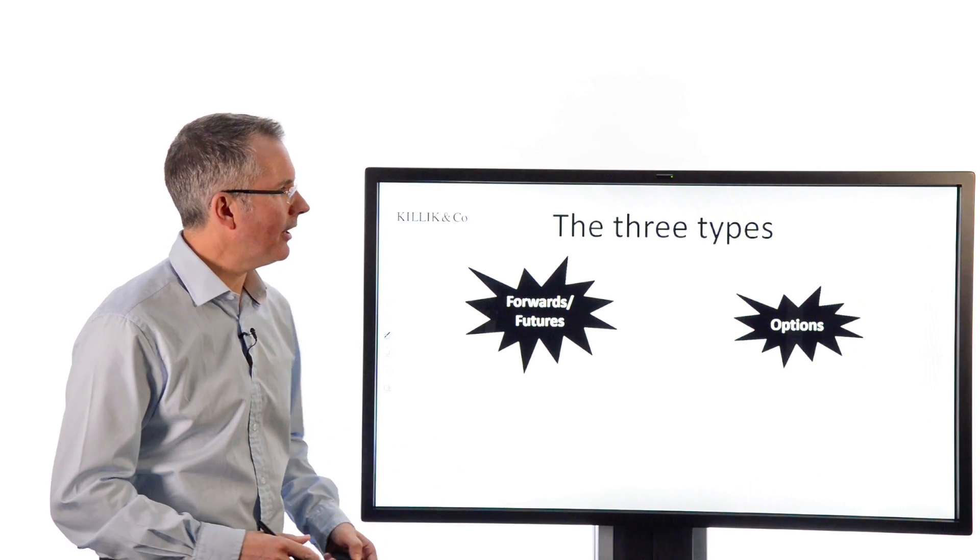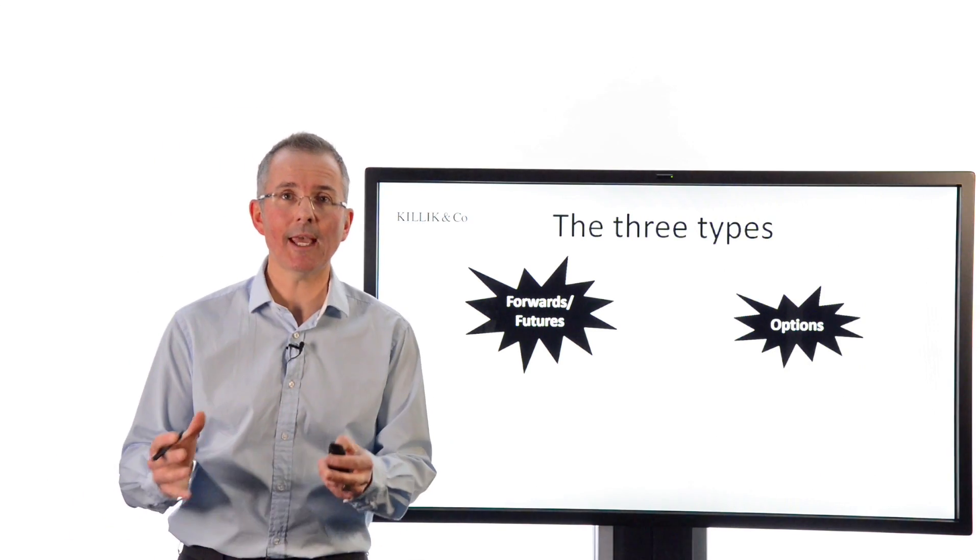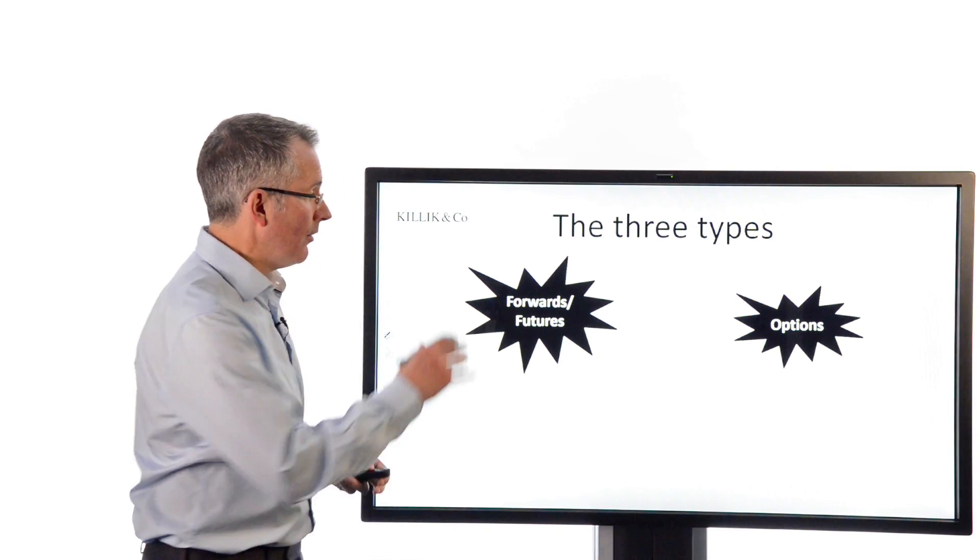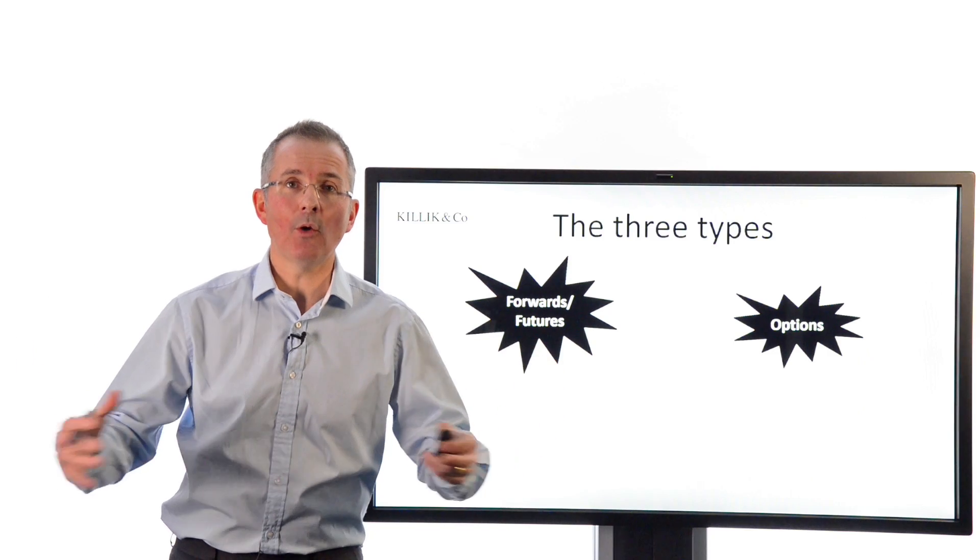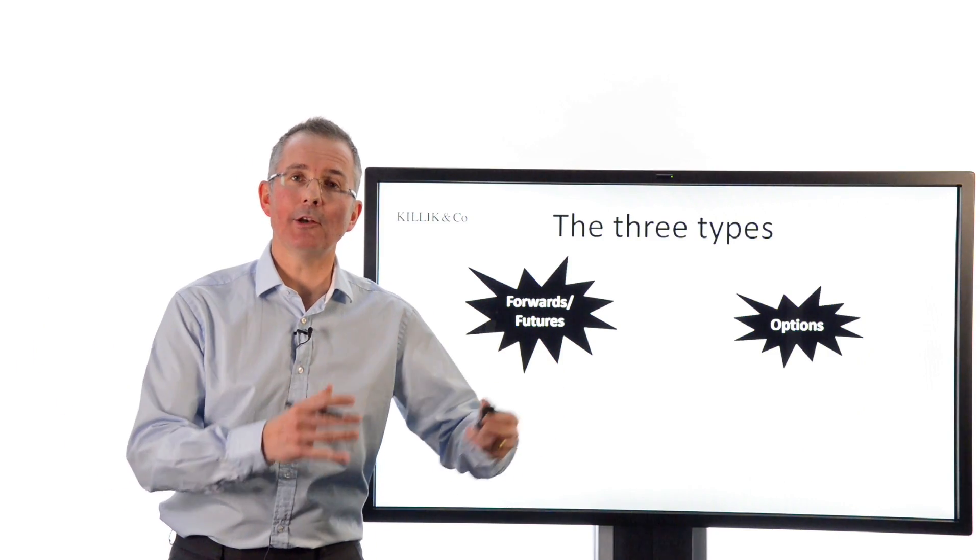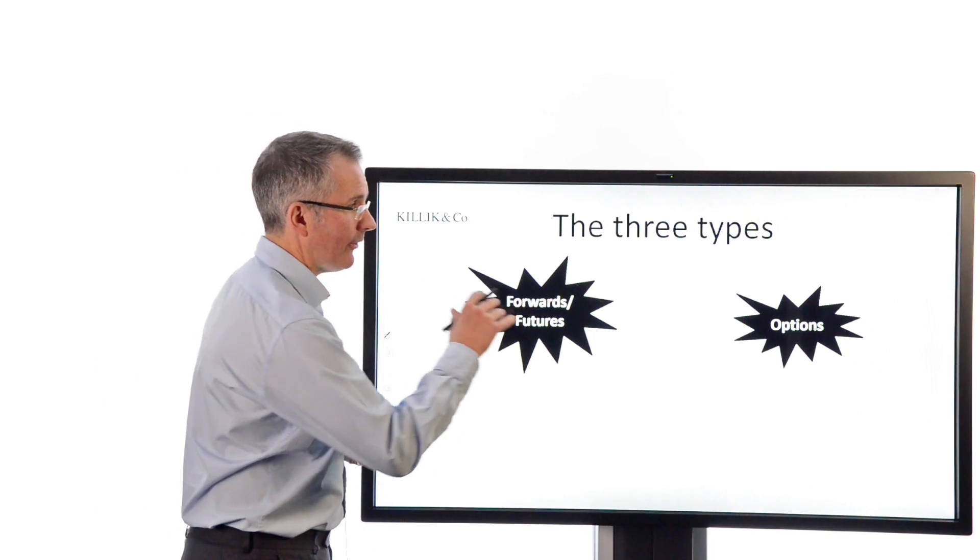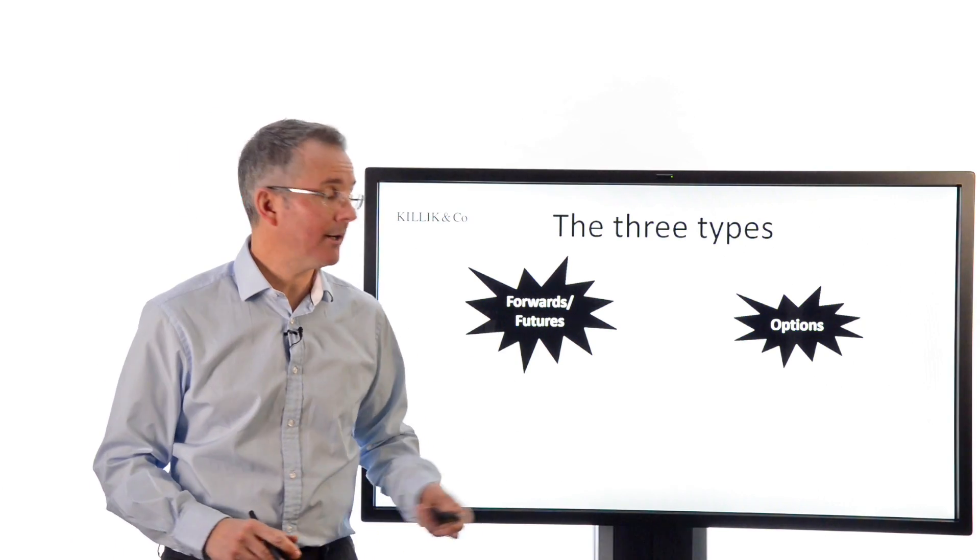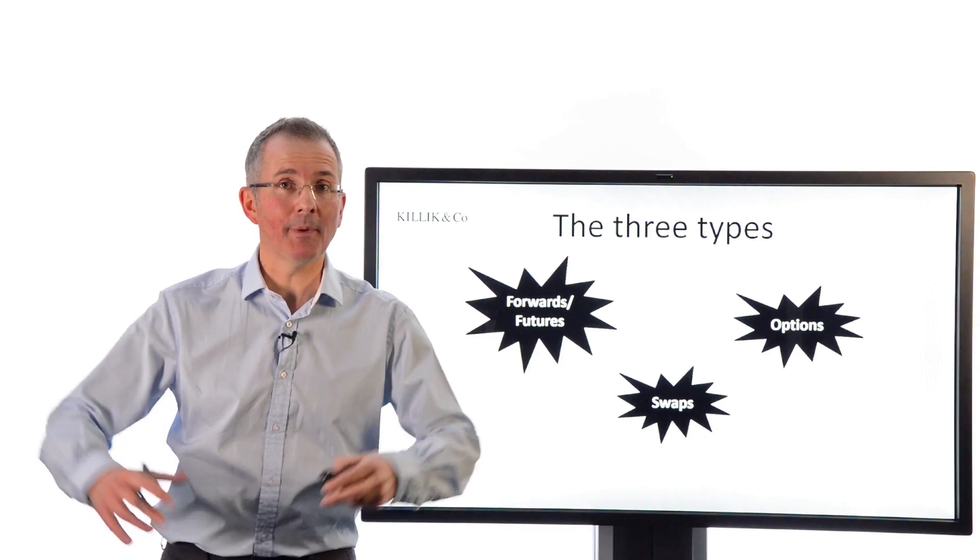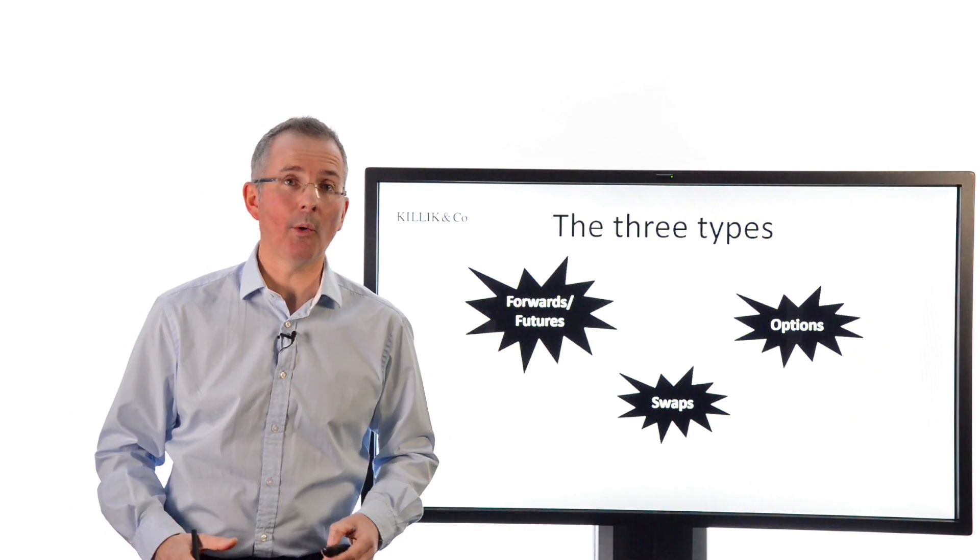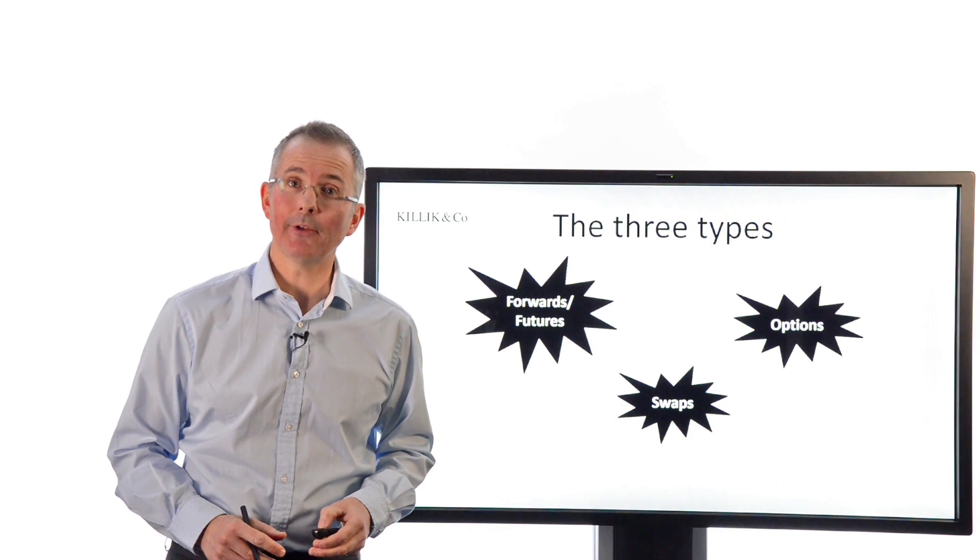There are three types of derivative. I'm going to deal with two. The two I'm going to take on here are the ones that retail investors can get somewhere near with products designed for them: forwards and futures, and options. In the retail world, they're called other things like spread bets and traded options. Swaps are the third type of derivative, but those are normally only used by big institutions and corporates. I'll leave those to one side.